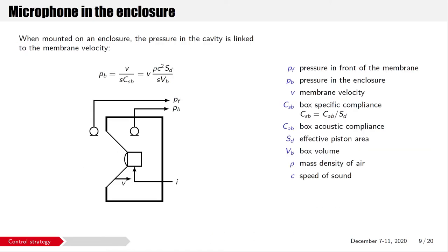For implementing a feedback loop, an estimation of the actual velocity of the membrane is needed. This is done through a microphone in the speaker backing cavity. In this cavity, the pressure p_b is proportional to the membrane displacement. By numerically differentiating it, the membrane velocity is obtained. The proportionality factor is called the box-specific compliance and is directly linked to the volume of the box V_b.